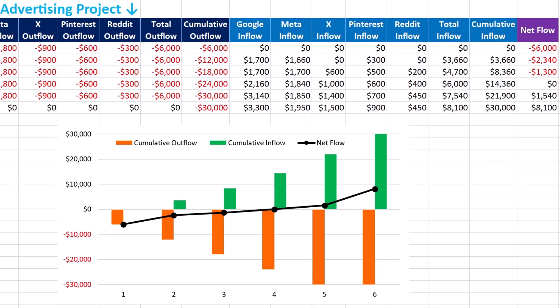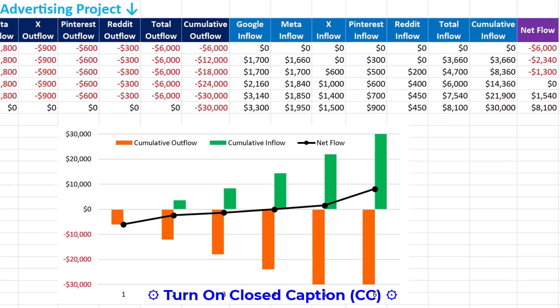The next important observation is about breakeven point and cash flow timing. While the campaign eventually breaks even by reaching $30,000 cumulative inflows by week 6, the first four weeks see a cumulative outflow of minus $24,000, meaning the advertiser must have sufficient liquidity to sustain operations before inflows catch up. Businesses must ensure they have the working capital to bridge this gap, especially in longer or higher-budget campaigns.